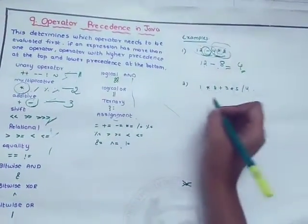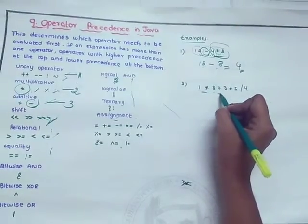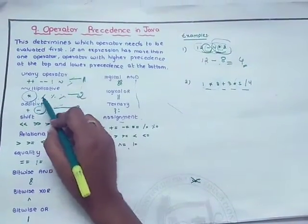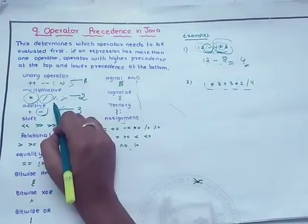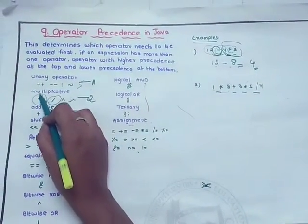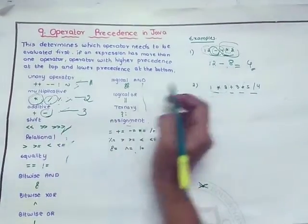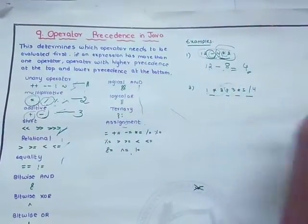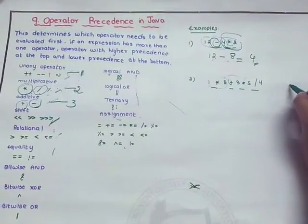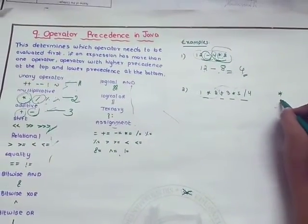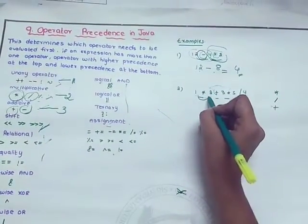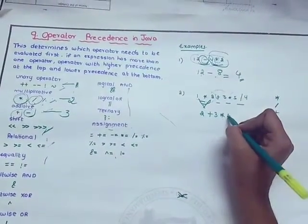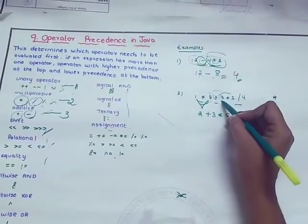Now consider this expression: we have multiplication, addition, multiplication, and division. Multiplicative operators have second priority — and division is also second priority — so we have to first consider multiplication, then division. Addition has third priority so we evaluate it last. According to the priorities of operators: multiplication should be evaluated first, then division, then addition. So: 1 times 2 is 2, and 3 times 5 is 15.